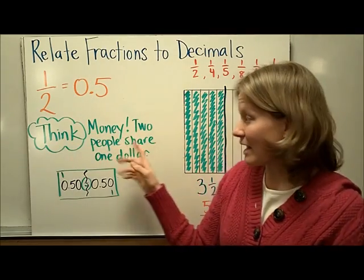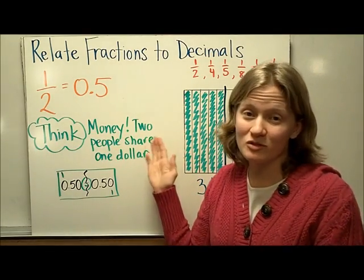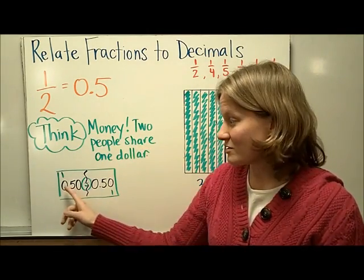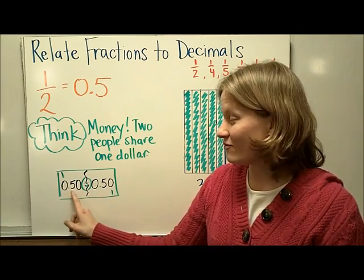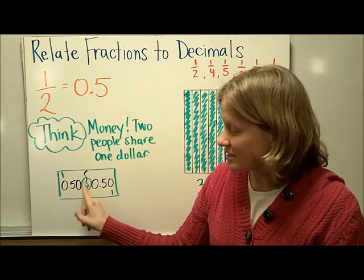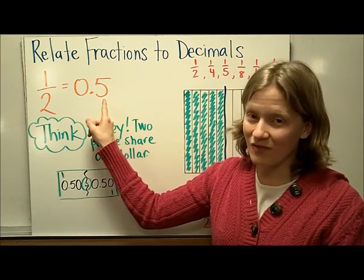So for 1 half, let's think about money. Two people, if two people share 1 dollar, then each person will get 50 cents, and we know that 50 hundredths, you can just take away the 0, is the same as 5 tenths.